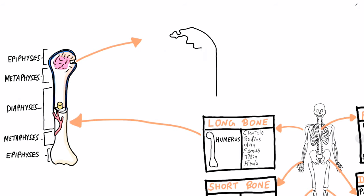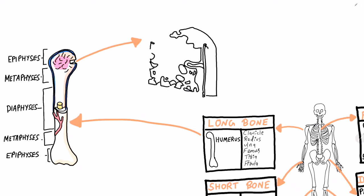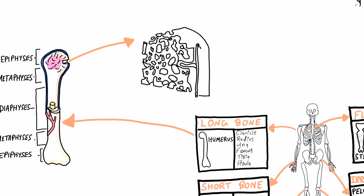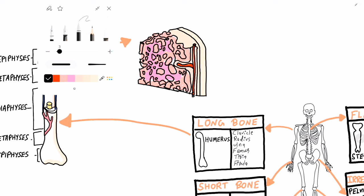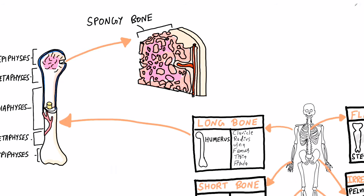Let us take a closer look at the spongy bone and its structure. Spongy bone has the appearance of a sponge due to needle-like bones forming a dense meshwork with open spaces, and these spaces contain small blood vessels. This particular structure is known as trabeculae.